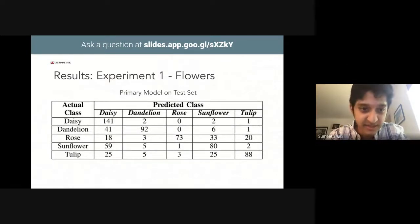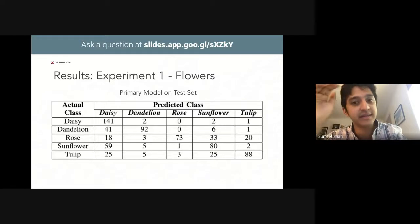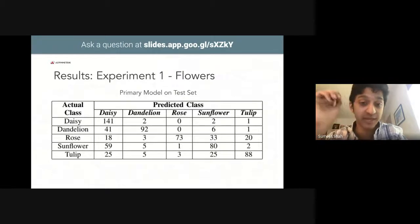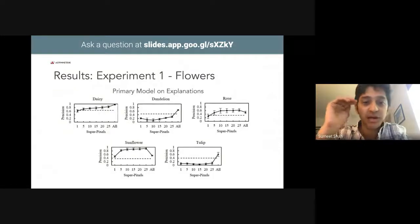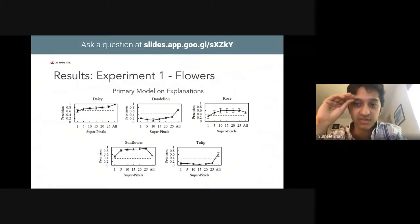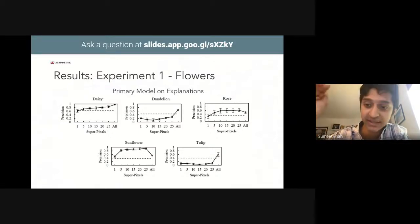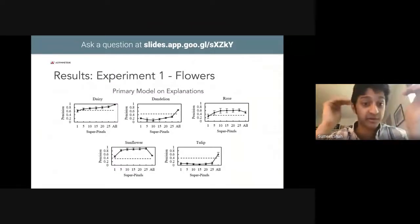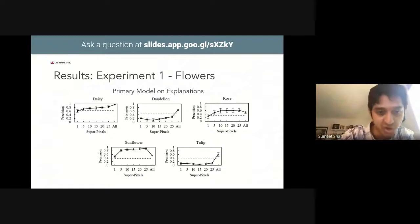Moving on to the sufficiency results of the flowers data, here we can see the average matrix for the flowers primary model. Unlike the cats and dogs model, this model had only 587 instances per class. The primary model does not perform nearly as well. The model is able to identify daisies with very high precision, but has relatively low precision for the other four classes. Looking at the primary model on the explanations, we see that the sufficiency of explanations with different numbers of superpixels varies wildly between the five classes.